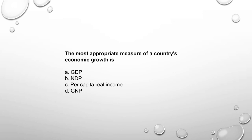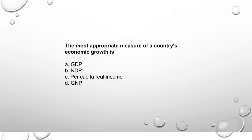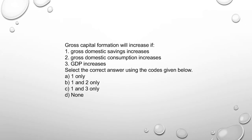The most appropriate measure of a country's economic growth is per capita real income. Gross capital formation will increase if gross domestic savings increase — saving increases lead to capital increases. GDP increase alone can lead to gross capital formation increase, so option 2 only is correct — option D.